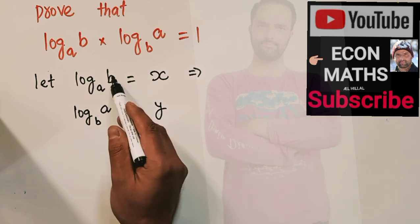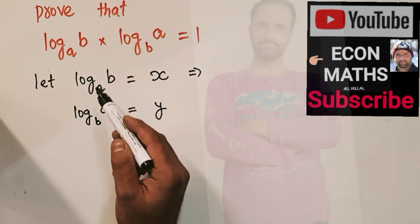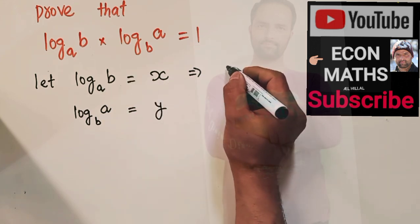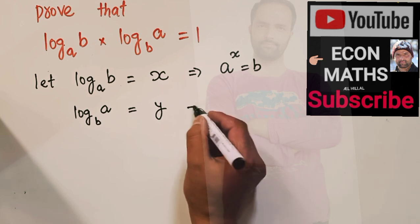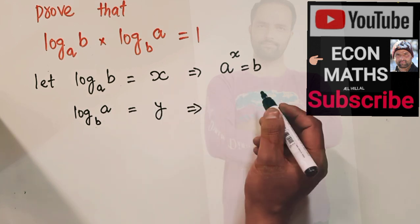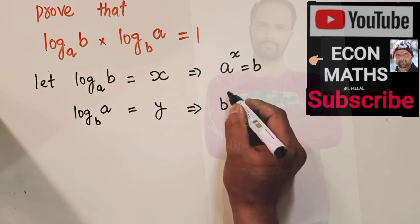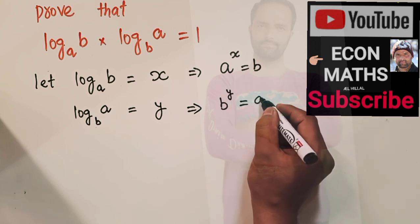Now, this log B with base A is equal to X. It can be written in exponential form that is A raise power X is equal to B. And here also B raise power Y is equal to A. If we convert it into the exponential form, that means B raise power Y is equal to A.